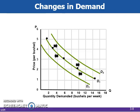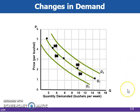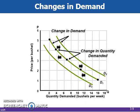A change in one or more of the determinants of demand causes a change in demand. In other words, when we begin to allow factors other than price to interfere, the original curve is no longer accurate and it is necessary to create a new demand curve entirely. An increase in demand is shown as a shift of the demand curve to the right, as from D1 to D3. These changes in demand are to be distinguished from a change in quantity demanded, which is caused by a change in the price of the product and is shown by a movement from one point to another on a fixed demand curve.